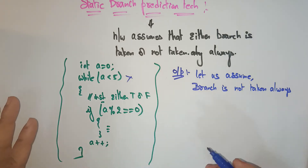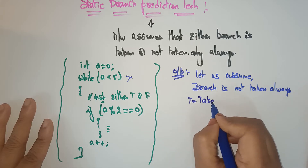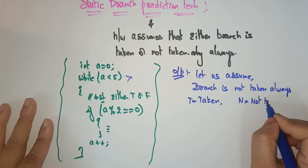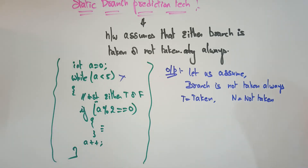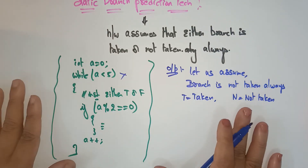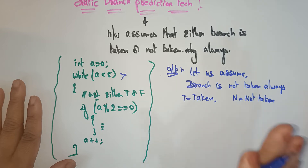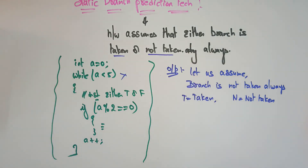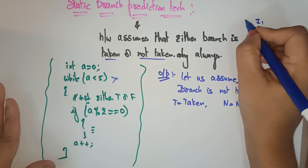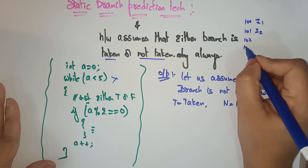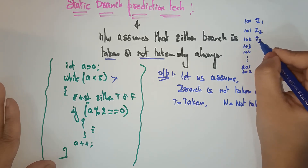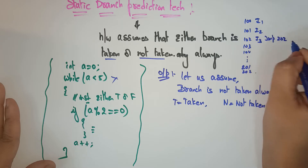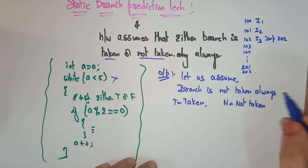Let's take T means taken and N means not taken. Students, don't get confused. Static branch prediction means either the branch is taken or not taken. Branch not taken means the next instruction will be taken in sequence. Suppose instructions are at addresses 100, 101, 102, 103 — they go sequentially. When instruction 3 says jump to address 202, if branch is not taken, we do not jump to 202.